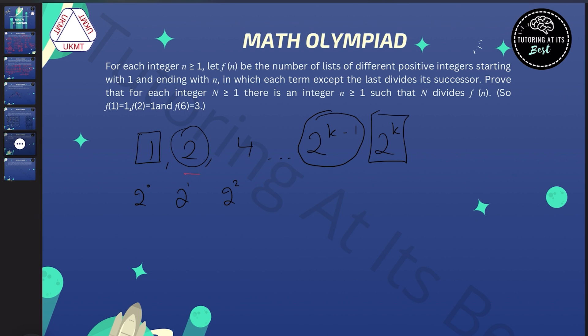I'd choose two or not, or four or not, and so on. So what does that mean? Well, that means that there's 2 to the k minus one different lists, because that's choices of two things at k minus one times. So f(2 to the k) is seen as 2 to the k minus one, which is a nice number.